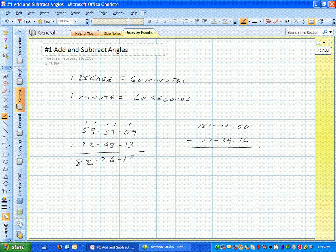Now, 0 seconds minus 16 seconds, you can't do it, so you have to borrow. Borrow 1, you can't borrow anything here, so this becomes 179, 59, 60. Now you can simply do the math, 44 seconds, 25 minutes, 157.